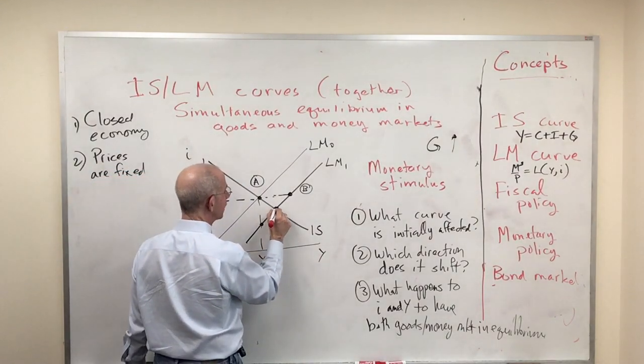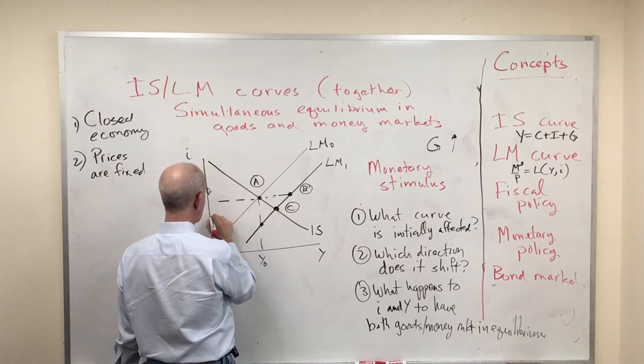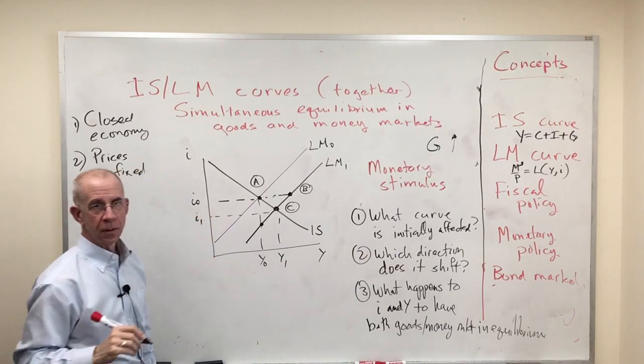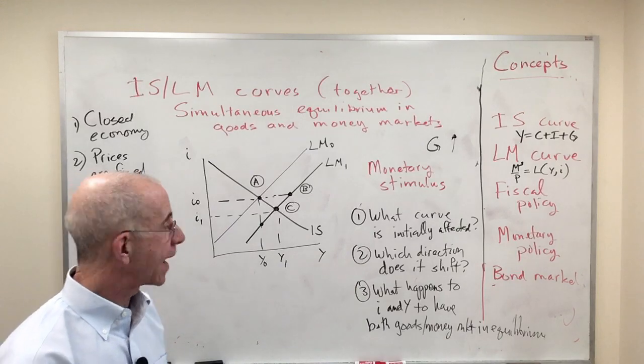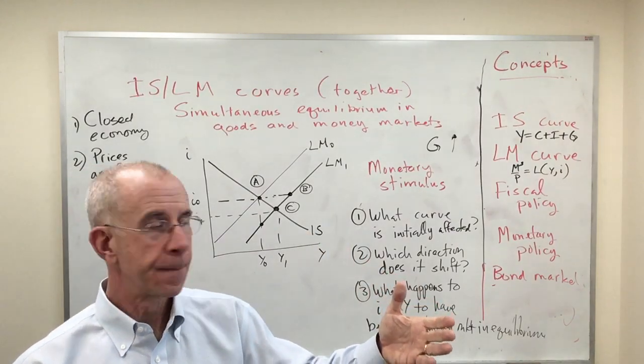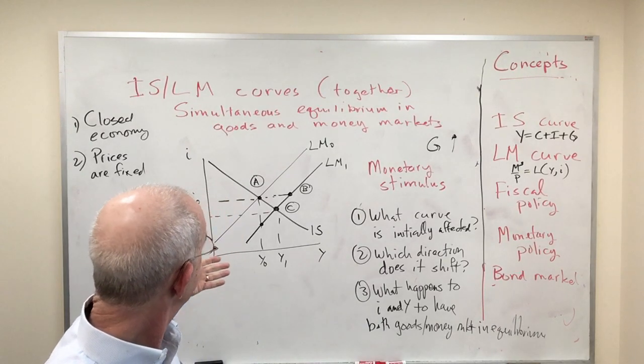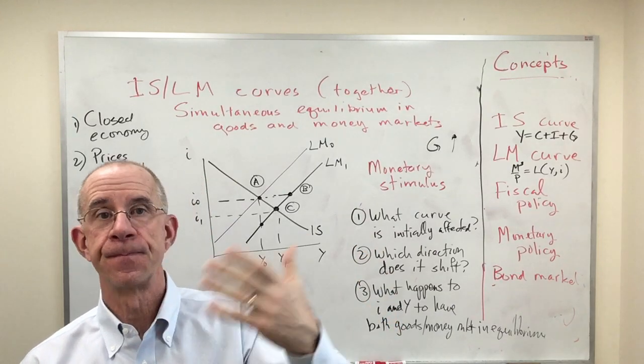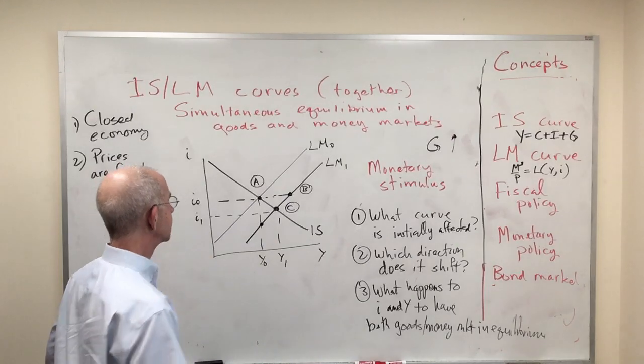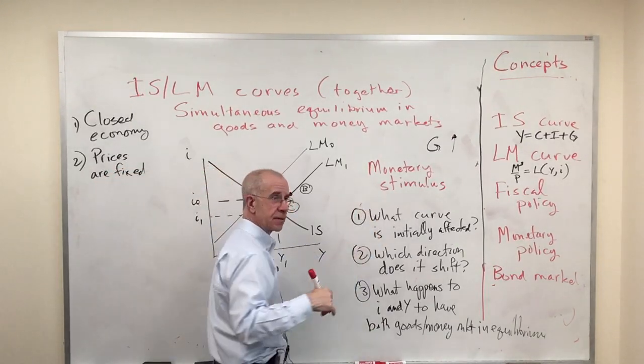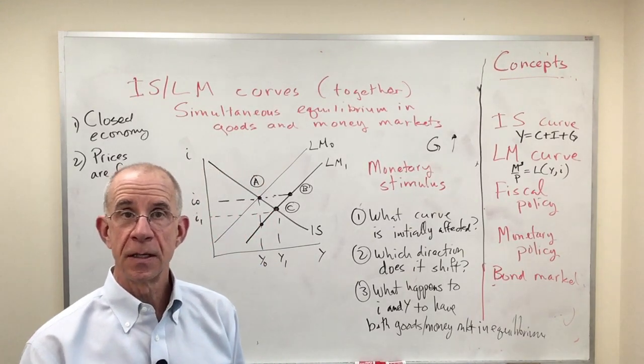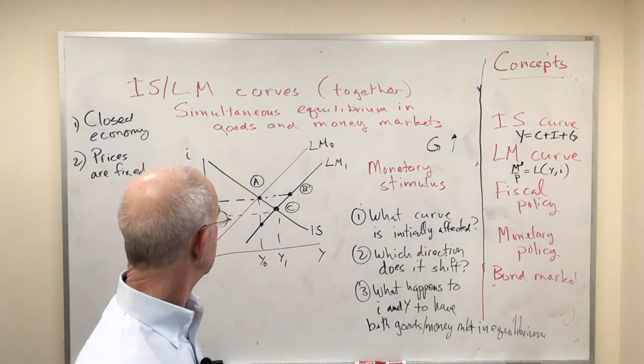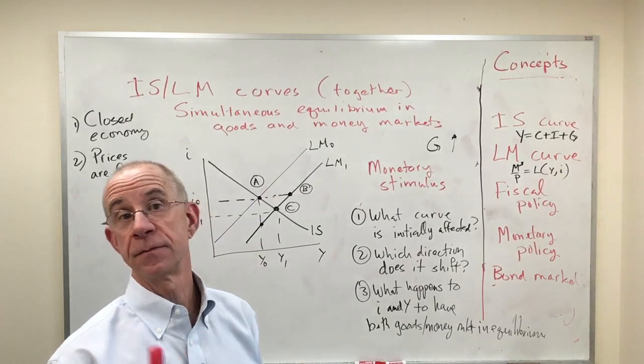Equilibrium, you have something in between, at a point C, at lower interest rates and higher GDP. So what we have here is a monetary stimulus that will result in a new equilibrium with lower interest rates and higher output. Again, that reflects the fact that the monetary stimulus, certainly in the short run with fixed prices, is going to lower interest rates, making investment in new plant equipment and consumer borrowing less expensive, output increases.